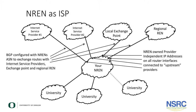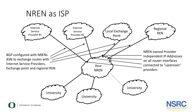When the NREN acts as an ISP, you can see that the NREN not only connects to the REN ecosystem, but it will also purchase internet service from an internet service provider. In this case, the NREN must have provider-independent address space configured on all external router interfaces connecting to the upstream providers, including the ISPs, internet exchanges, and other RENs.